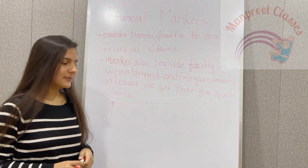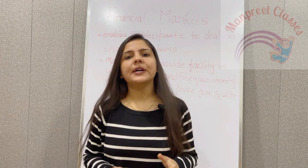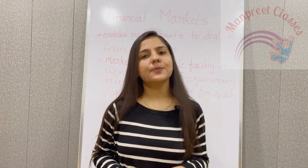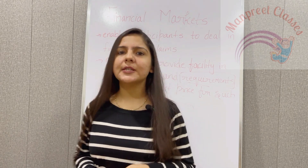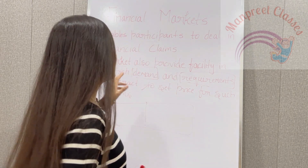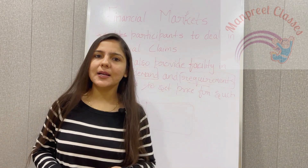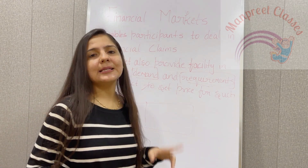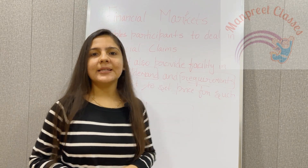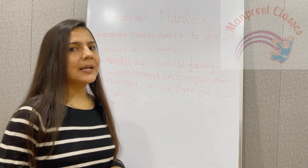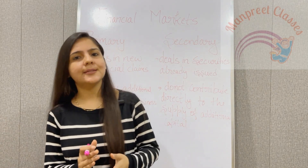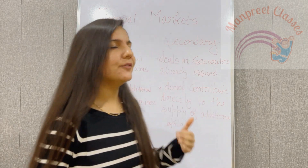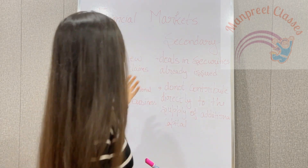These are the participants in the financial market who come together and interact to set the price of such claims. Financial market is classified in various ways, but we are going to study two important types: first is primary market and secondary market, and second is money market and capital market.